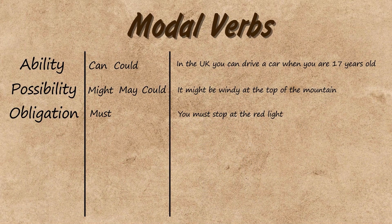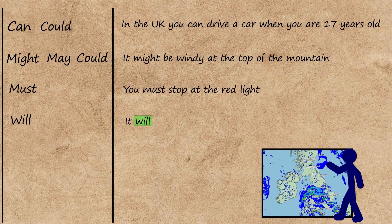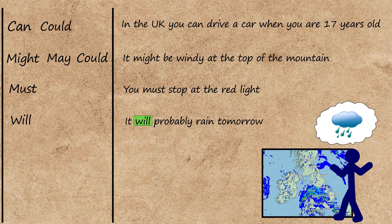If you want to make a prediction about something that is going to happen in the future, you can use will. For example, it will probably rain tomorrow. Will can also be used to make an offer or show a willingness to do something — for example, I will give you a ride home.